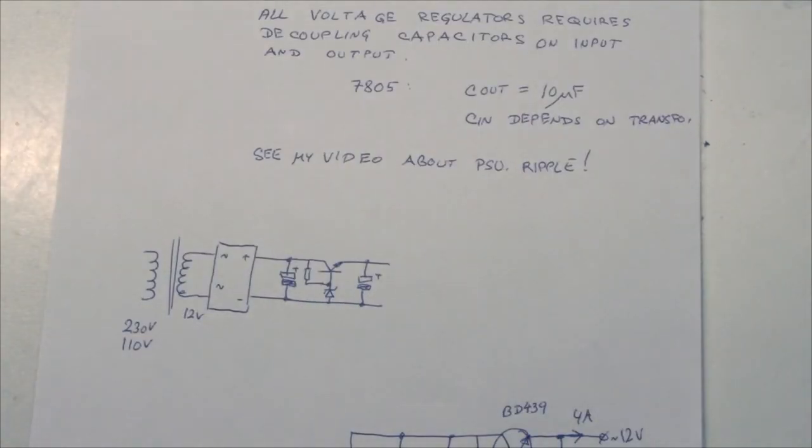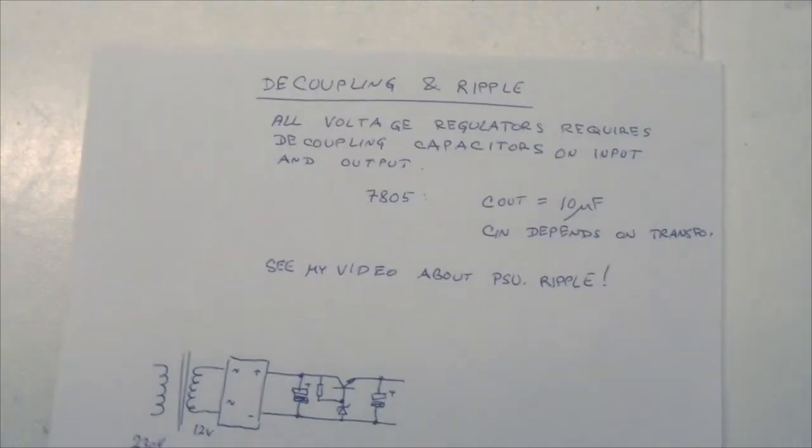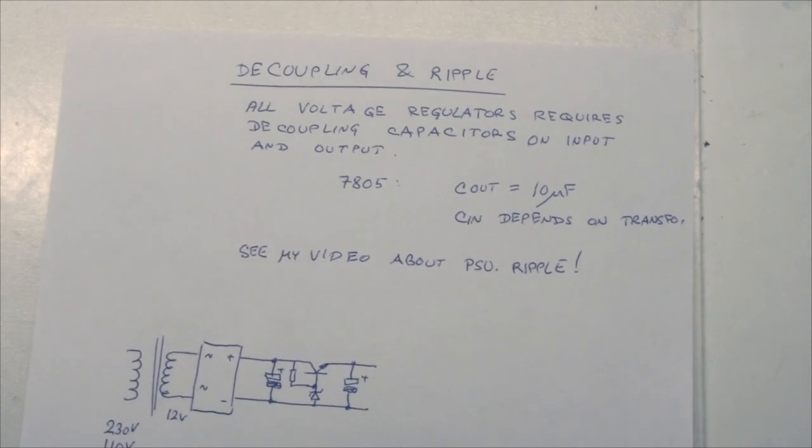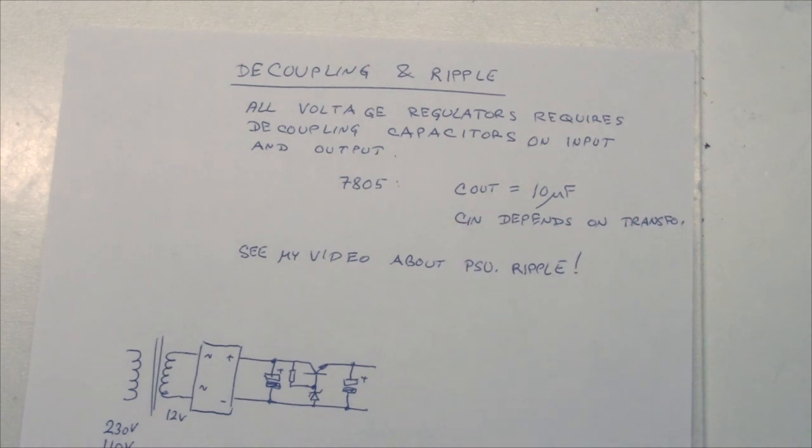Then of course we have in our previous video stuff about decoupling and ripple. I have shown in this video just the regulator portion, but of course they all need decoupling capacitors. I have another video about that, so just click the link below and have a look. But otherwise it typically says in the datasheet for the voltage regulator what kind of capacitance it requires on the inputs and outputs. For the 78XX series of voltage regulators, it typically requires a 10 microfarad capacitor on the output.